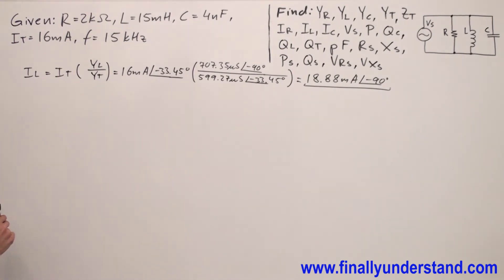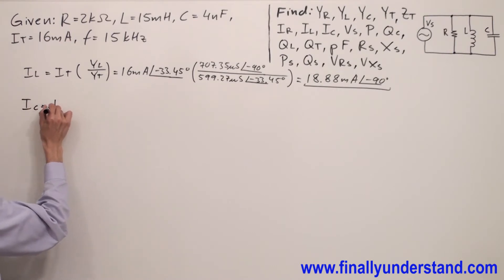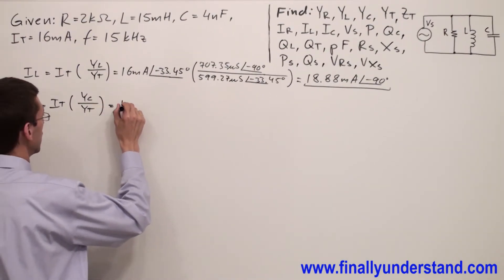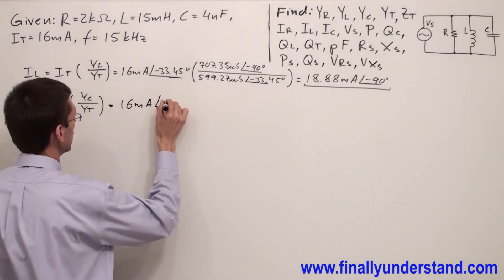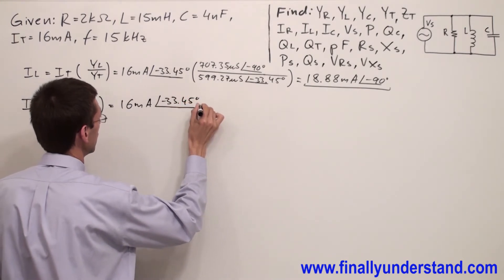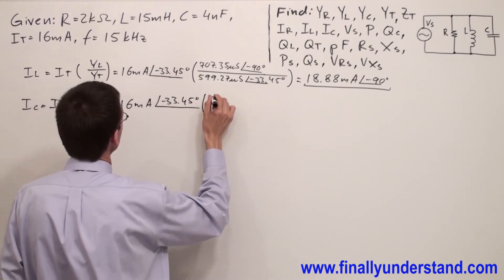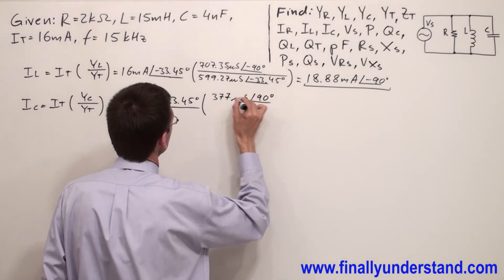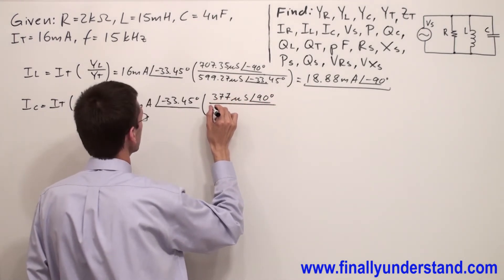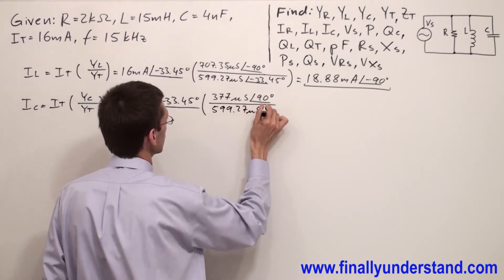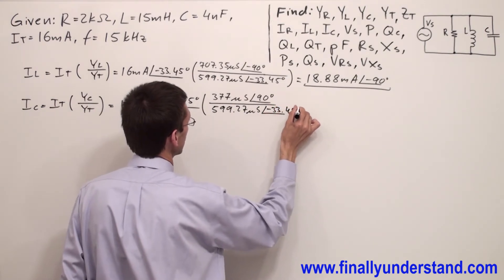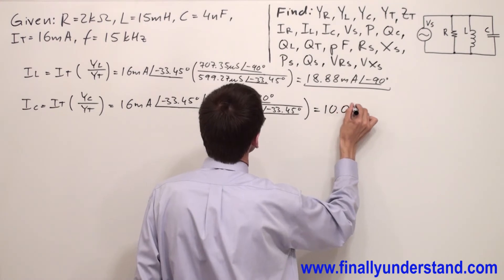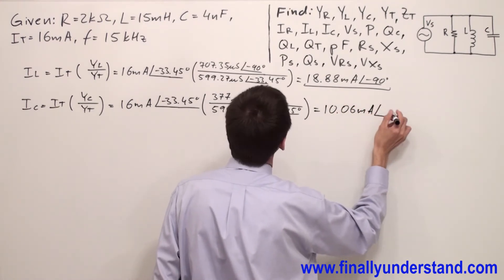Next we're supposed to find the current which goes through the capacitor. I_C equals I_total times Y_C over Y_total. This is equal 16 milliamps and angle of negative 33.45 degrees, times Y_C which is equal 377 microsiemens and angle of 90 degrees, over Y_total which is 599.27 microsiemens and angle of negative 33.45 degrees. So everything is equal 10.06 milliamps and angle of 90 degrees.